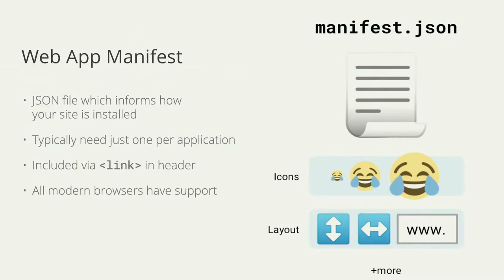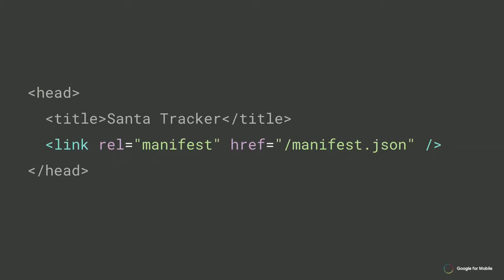The manifest file is a simple JSON which informs your site how to act when the user installs it. You need one for each of your apps, and you need to include a link to it from every page of your site so the user can tap install from anywhere — not just your home page. The 'link rel manifest' tag is how you specify the pointer to your manifest, and pretty much all browsers have some level of support for this.